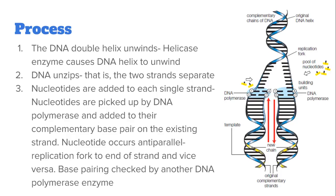Part three of the process is where nucleotides are added to each of the single strands of the parent molecule to form what we call the daughter strands, and then we form two identical copies of the DNA. These nucleotides are picked up by DNA polymerase from the pool of nucleotides and added to the complementary base pairs on the existing strand.